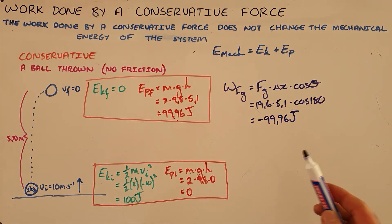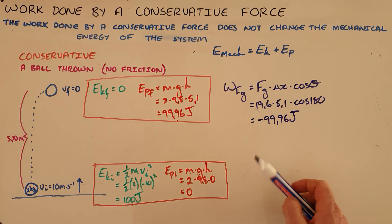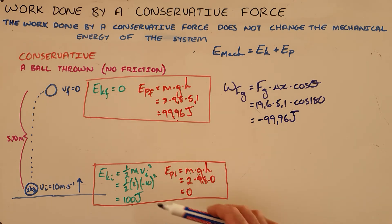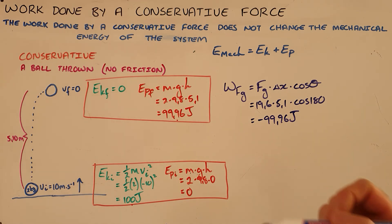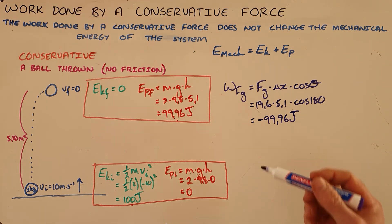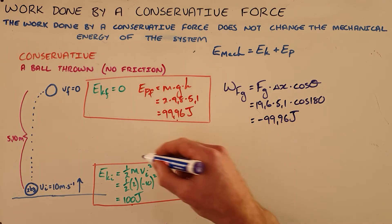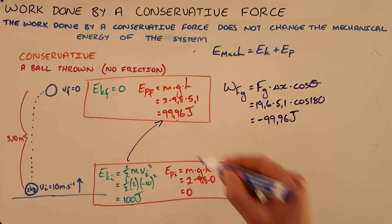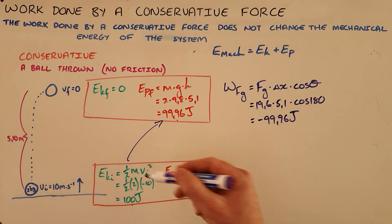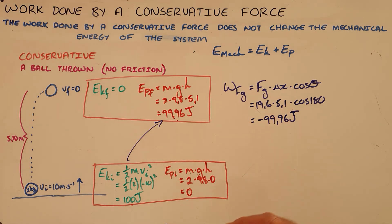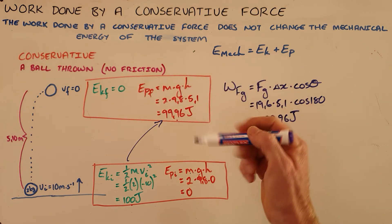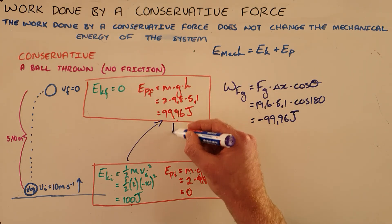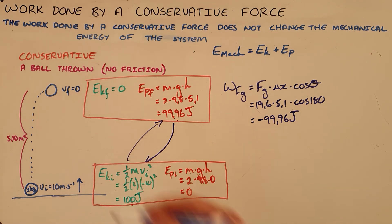The force of gravity does negative work on this object, which we would normally associate with energy being removed from the system. But because gravity is a conservative force, that energy is not removed but merely transformed — from kinetic energy into potential energy. If this object were allowed to continue its motion, that potential energy would decrease as kinetic energy increases as the object falls back down to earth.